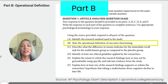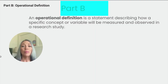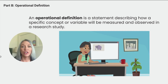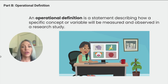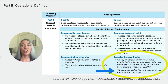Next, Part B asks us to state the operational definition of executive functioning. An operational definition is a statement describing how a specific concept or variable will be measured and observed in a research study. In this study, the operational definition of executive functioning is how quickly and accurately participants identified whether objects in the second set matched the first set. On your answer sheet, you could write: 'The operational definition is the scores on the executive functioning test,' to earn one point.